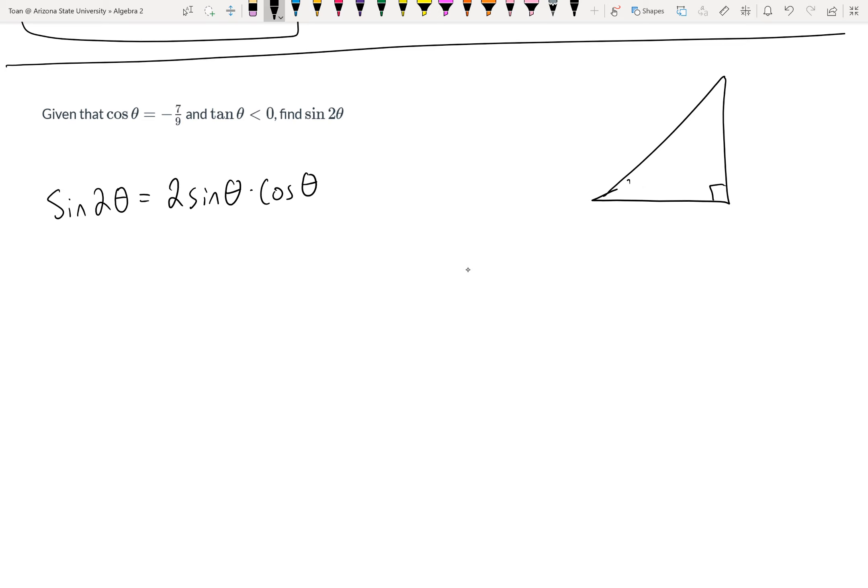If I draw a triangle and put my theta anywhere, what information do I know about this theta? According to the given information, the cosine of that angle is 7/9. Yes, they gave us a negative here, but I personally like to ignore the negatives when drawing a triangle. I'll take care of the negative at the end.